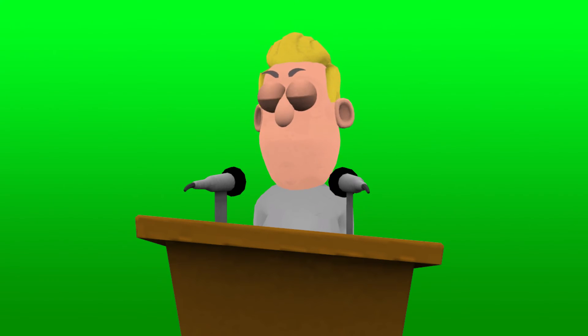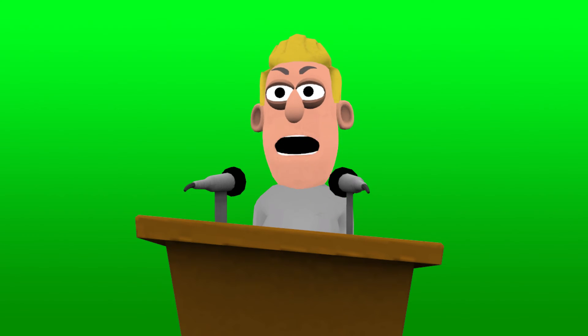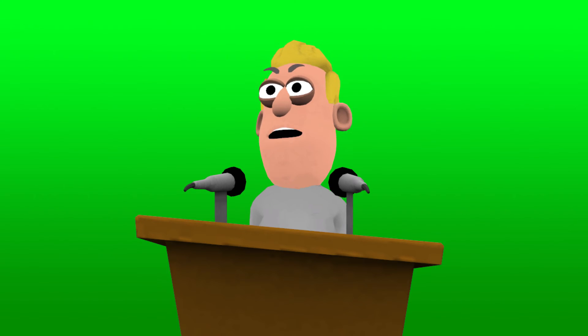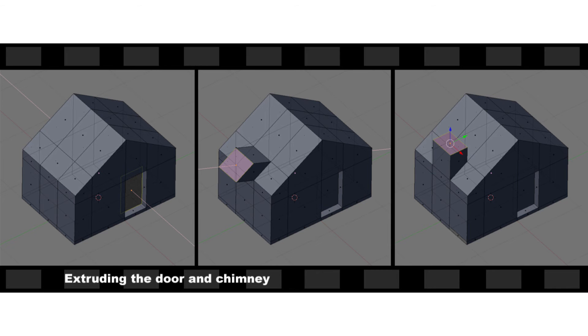Next, we'll have a look at extrusion modeling. Extrusion modeling also tends to start with a primitive such as a cube, but rather than adding subdivisions in the same way as box modeling, new geometry is created with each extrusion. As you can see in this example, one face is being selected and then the extrusion pulls that out, and rather than affecting the geometry around it, it just creates new faces to accommodate it.